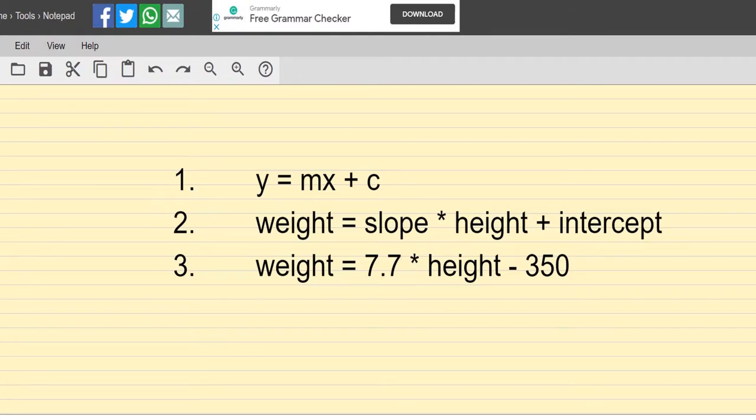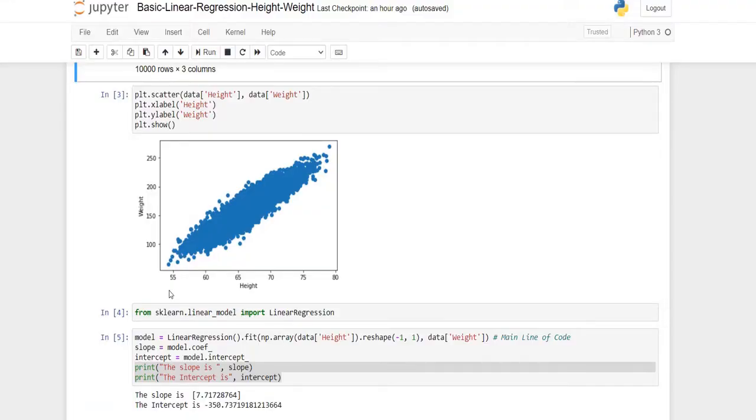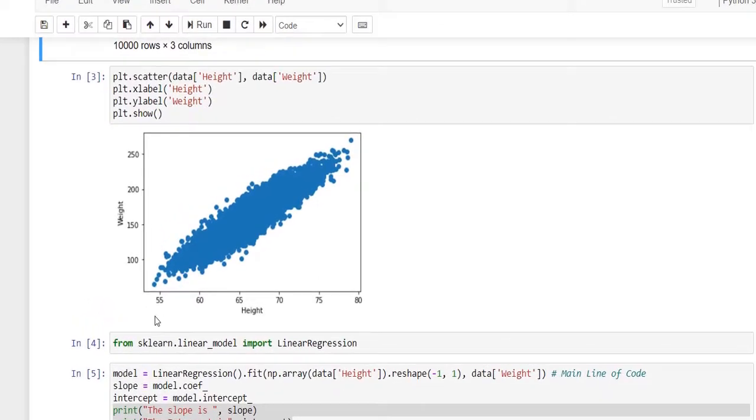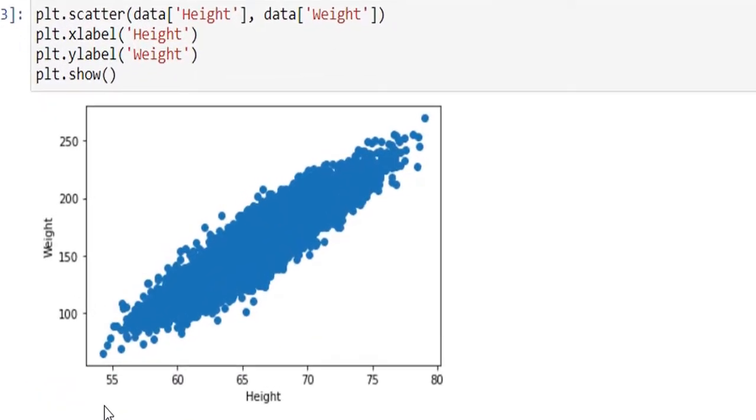I have plotted a graph for the height and weight dataset. This is a scatter plot with height on the x-axis and weight on the y-axis. While looking at the graph, we can say that there is some kind of trend in this data. When height is increasing, weight tends to increase. We can implement a linear model to predict a future variable where we don't know the value of weight but we have some idea of the height of a person.